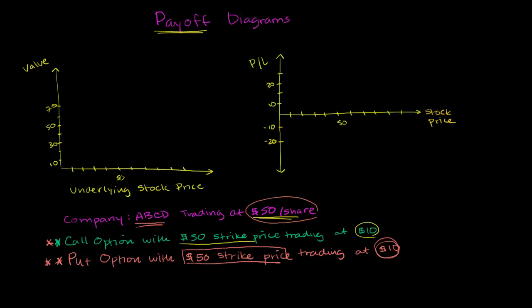The put option is going to make you money if the stock tanks, and the call option is going to make money if the drug gets approved and the stock skyrockets. So let's actually draw the payoff diagram here. If the stock goes down to zero, you would exercise the put option because you could buy the stock for zero, exercise your put option, and sell it for $50.